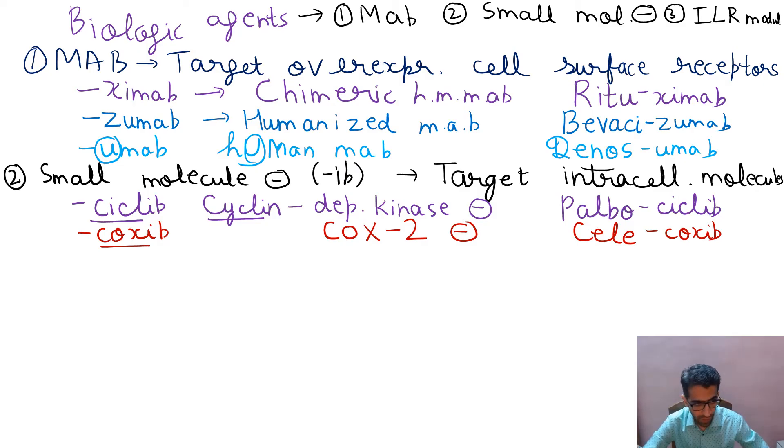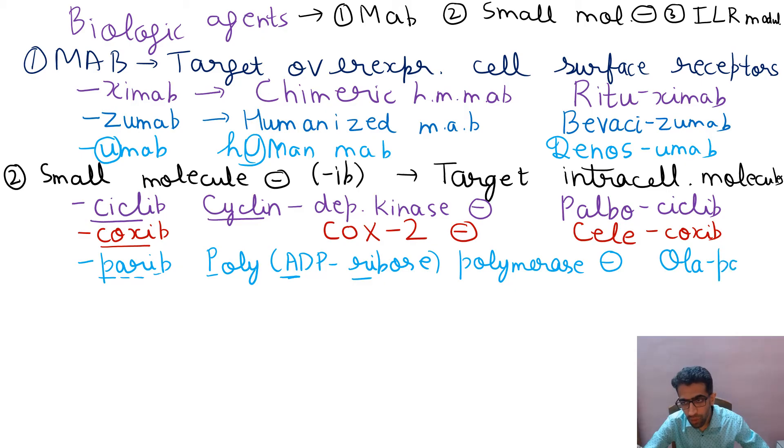Then parib, the Parineeti Chopra mnemonic which I told you. Parib, P-A-R-I, pari or a fairy in English. So P is poly ADP ribose polymerase inhibitor. Parineeti Chopra was sitting in an Ola cab, so Ola, olaparib.